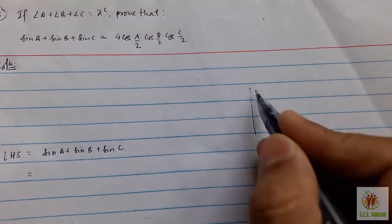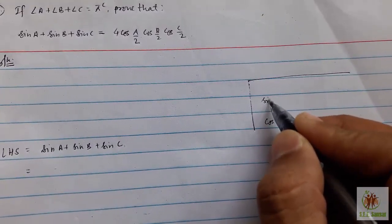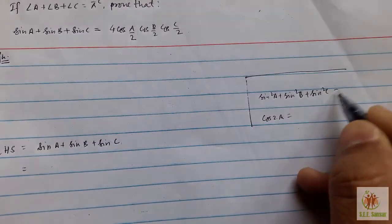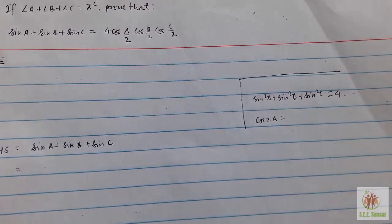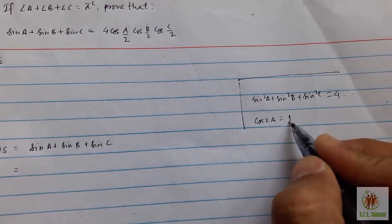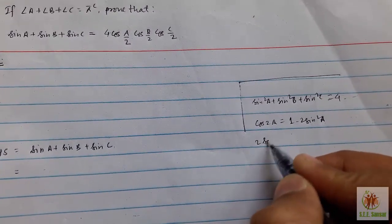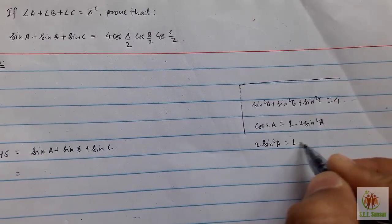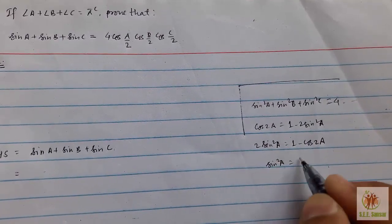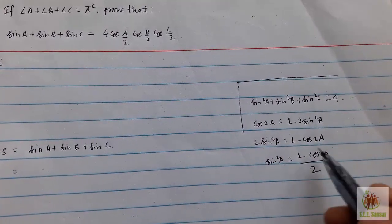Suppose, this is not required in this question. Suppose the question is something like sin²A + sin²B + sin²C equal to something. Then we have the formula cos 2A = 1 - 2sin²A. Bring that 2sin²A to right hand side: sin²A = (1 - cos 2A)/2.